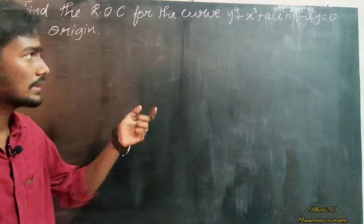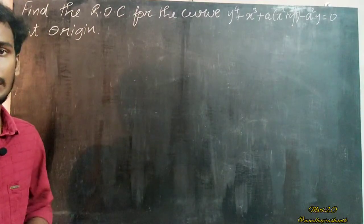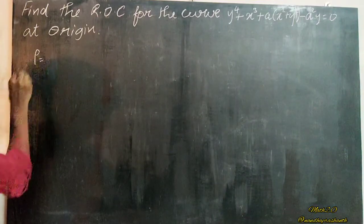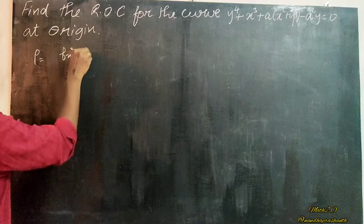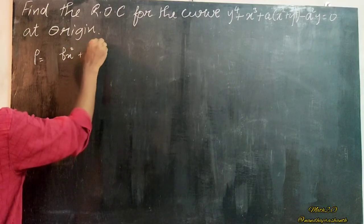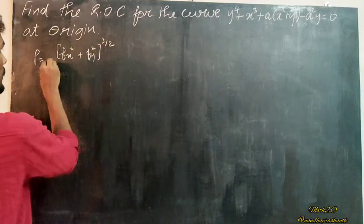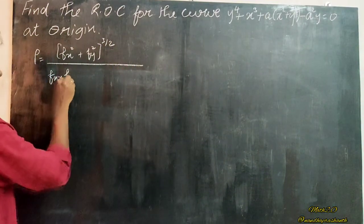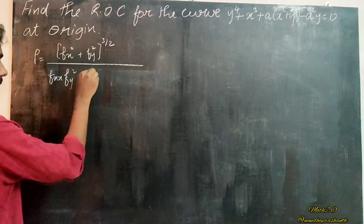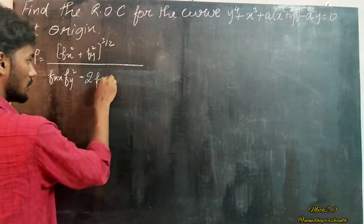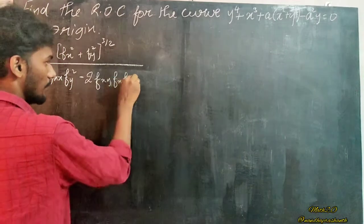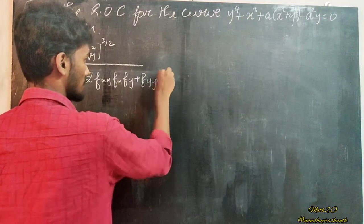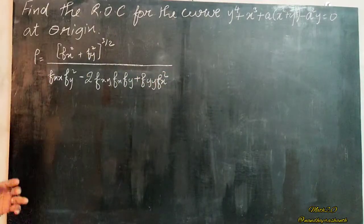How do we find the radius of curvature in this equation? The radius of curvature formula is: rho equals fx squared plus fy squared, whole power 3 by 2, divided by fxx times fy squared, minus 2 times fxy times fx times fy, plus fyy times fx squared. So we have to apply this formula.